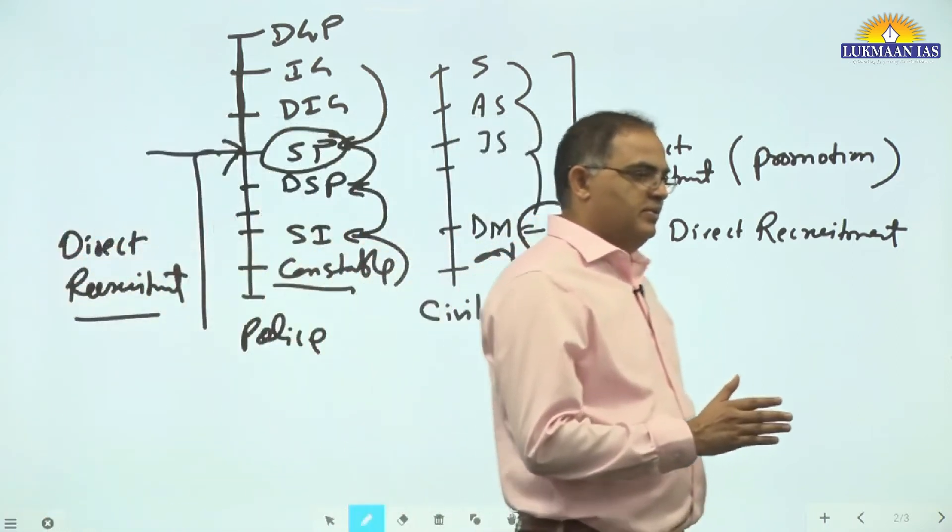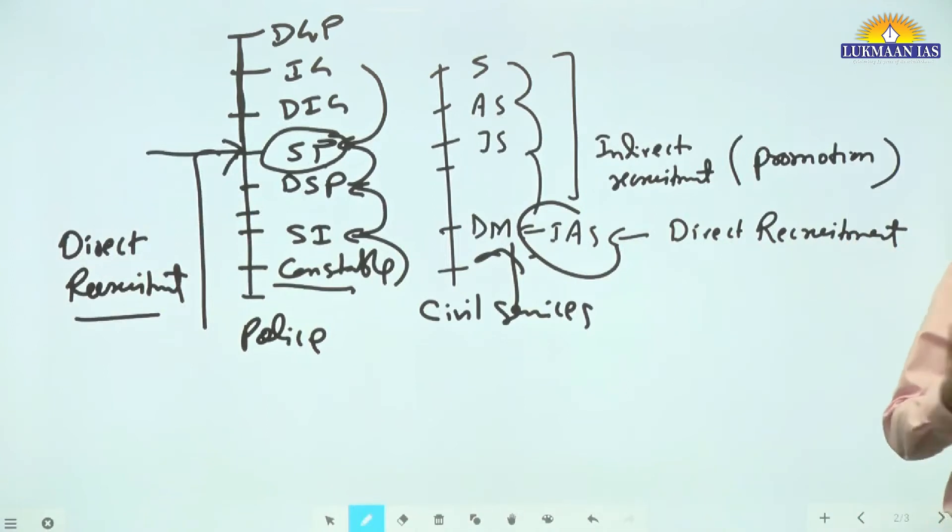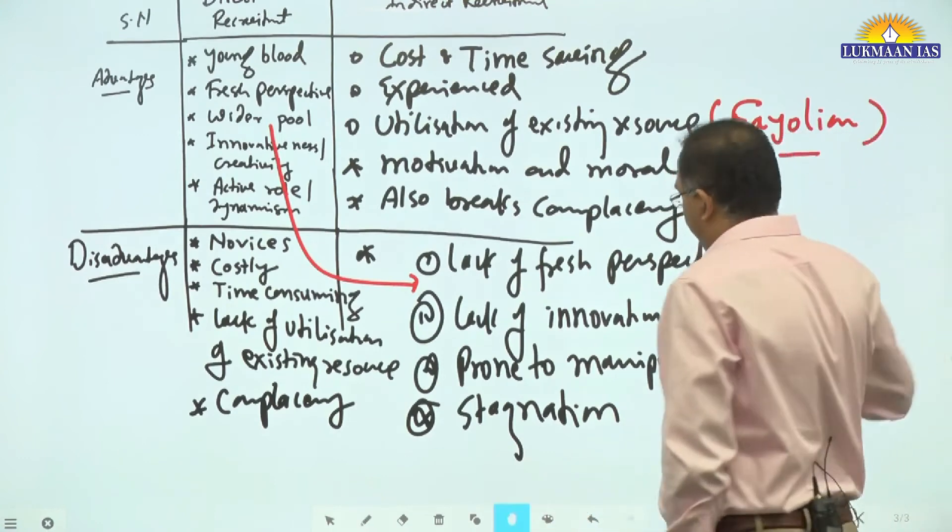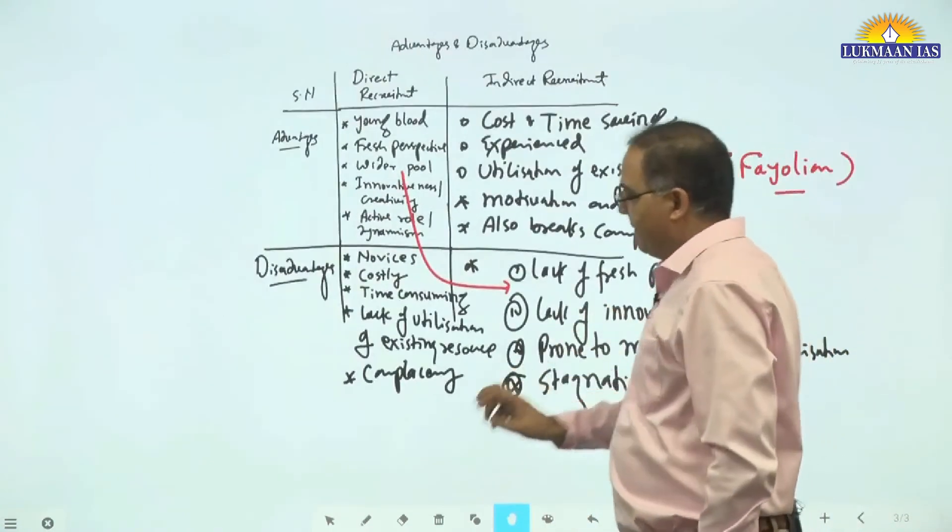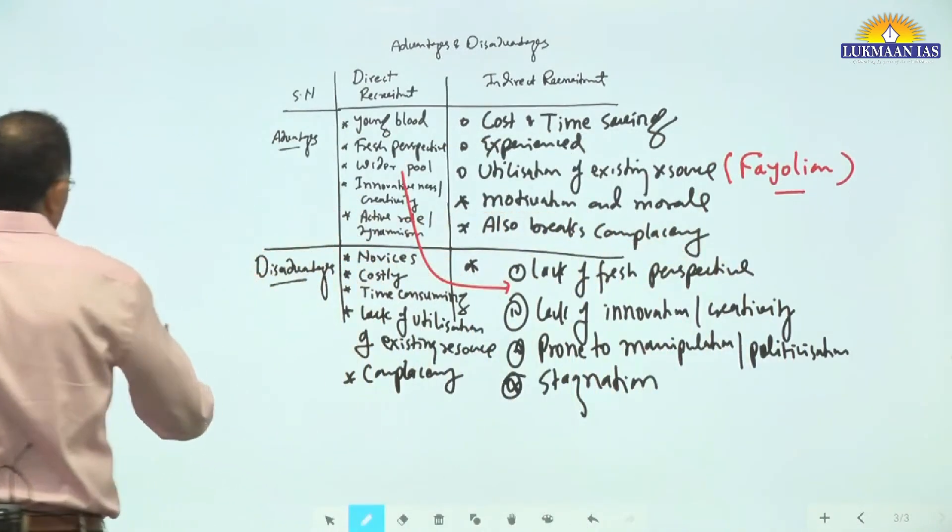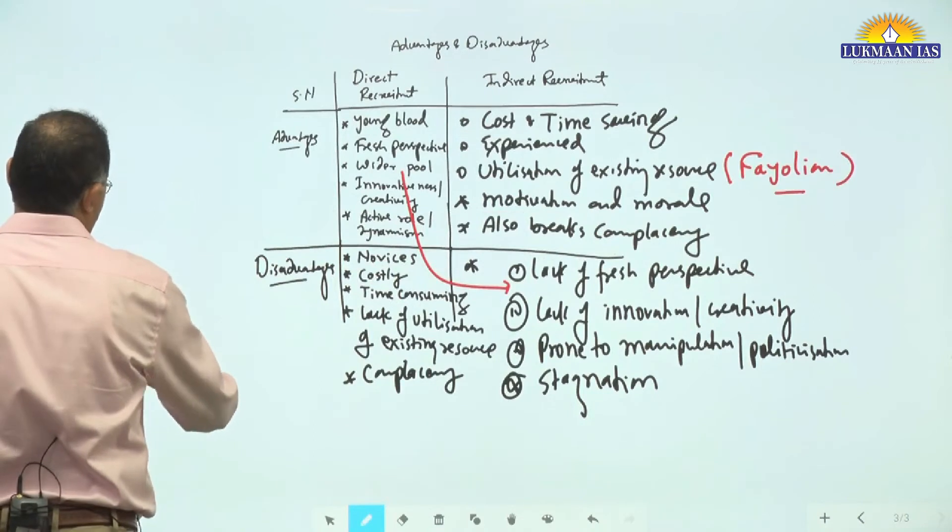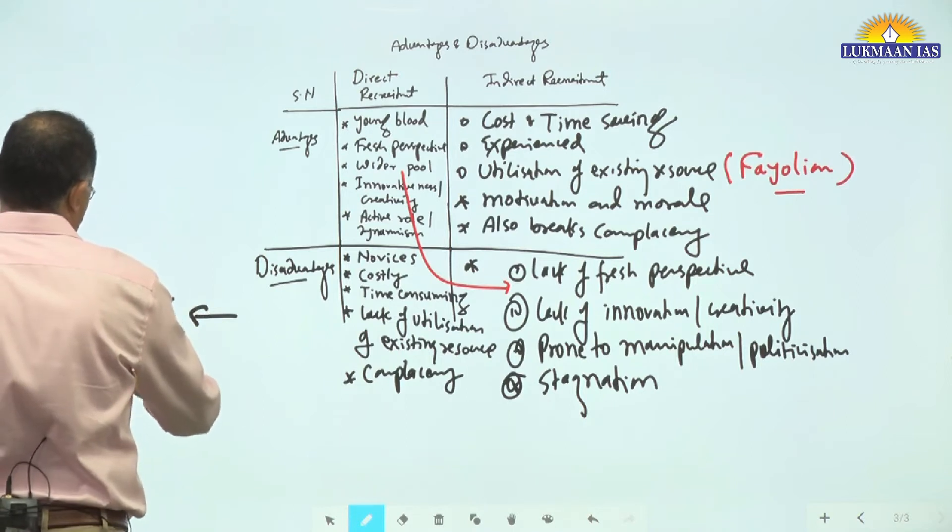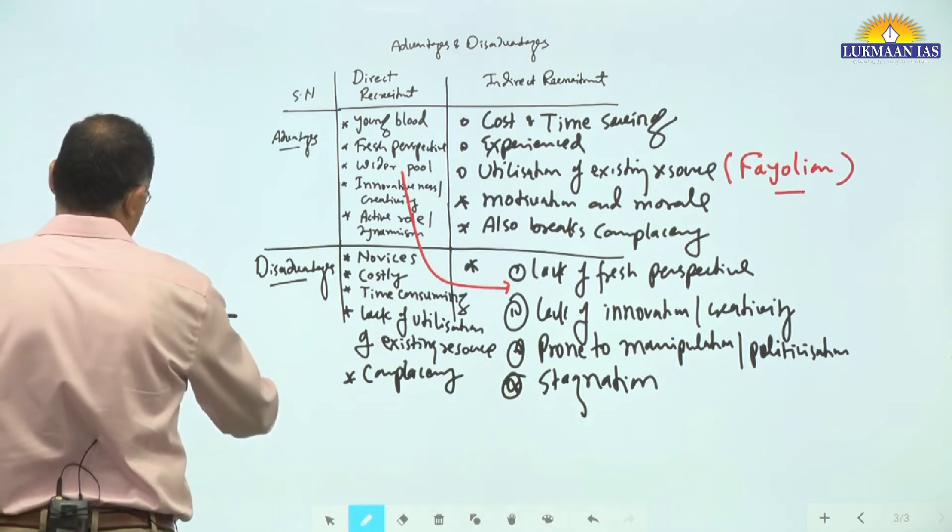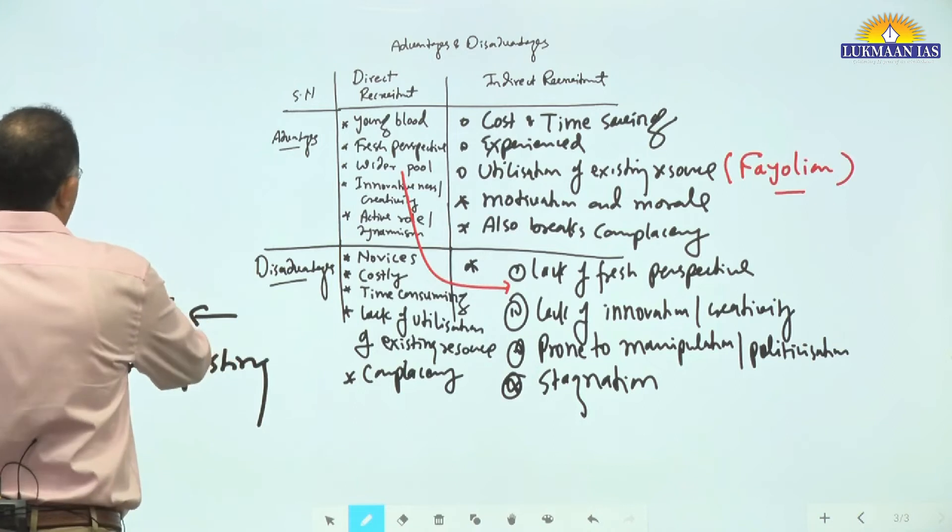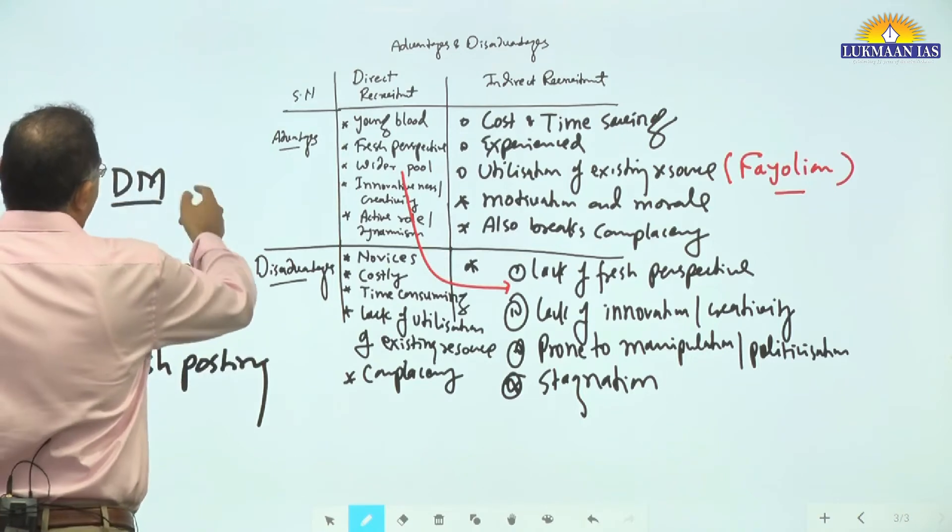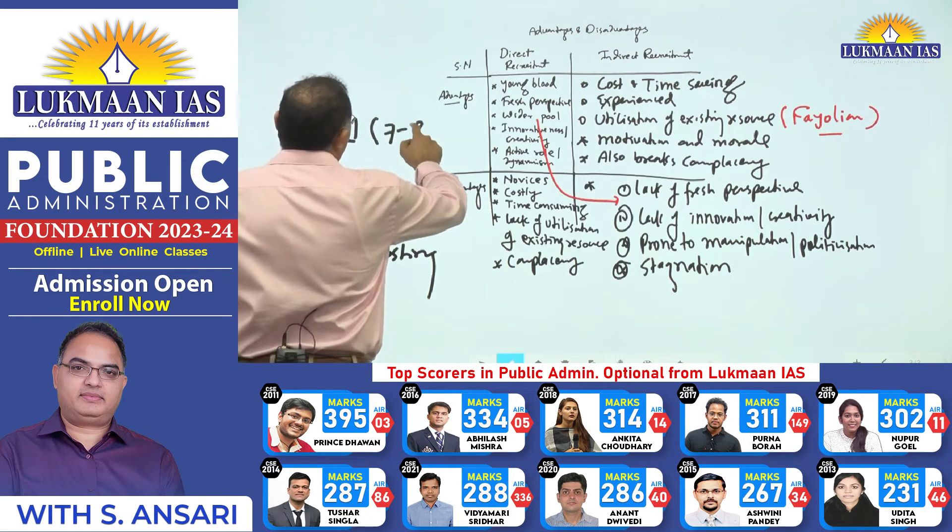Let us take IAS. Let us say a new or fresh IAS officer will basically be like an SDM. Now let us take a DM who has already become, let us say, seven to eight years old in service.